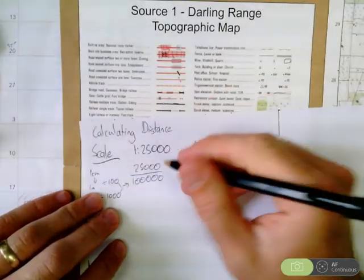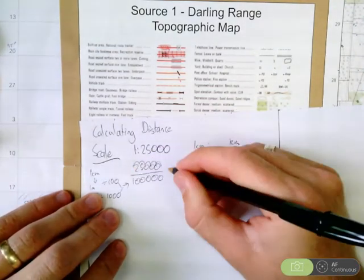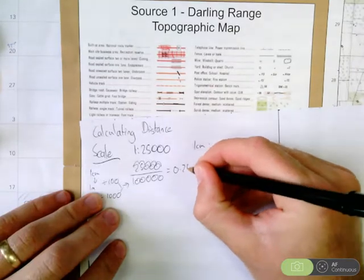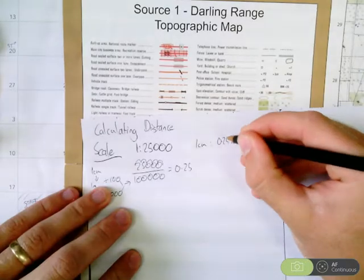So you don't need to calculate it. All you need to do is knock it back five decimal places. 0.25. So 1 centimetre is 0.25 kilometres.